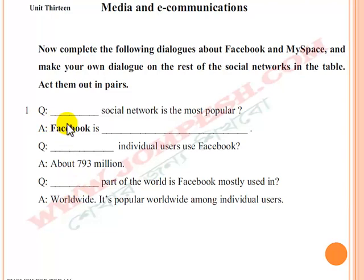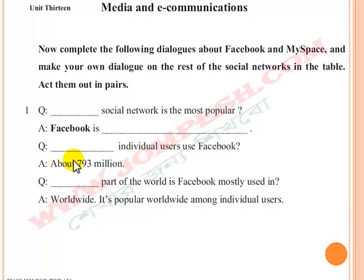Question: Which social network is most popular? Answer: Facebook is the most popular social network. Question: How many individual users use Facebook? Answer: About 793 million.